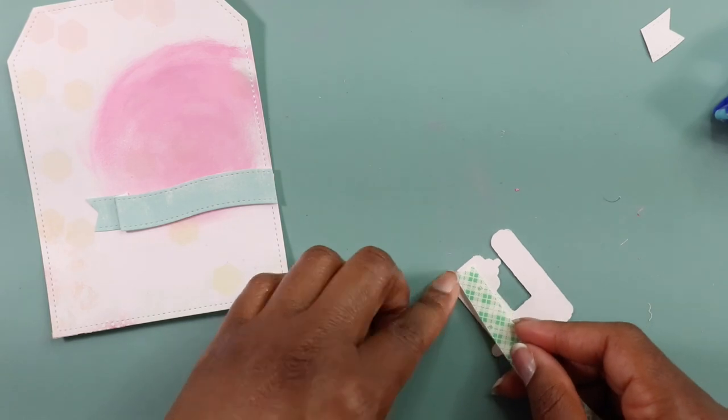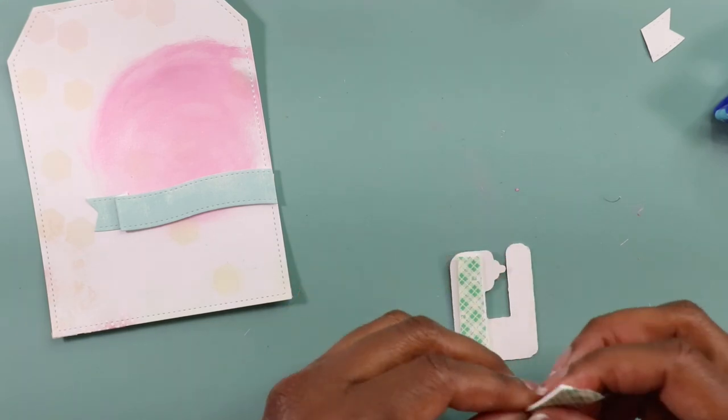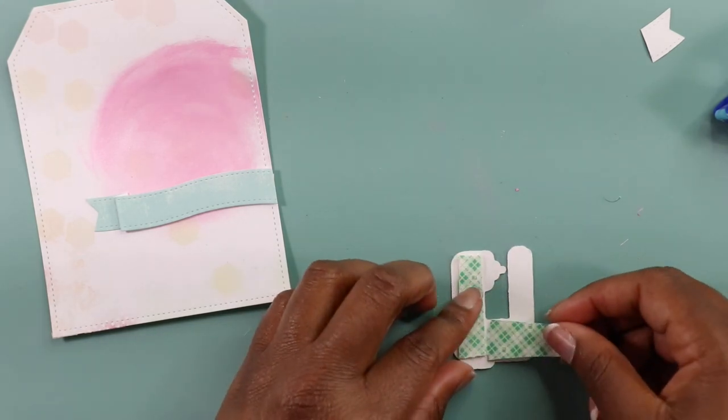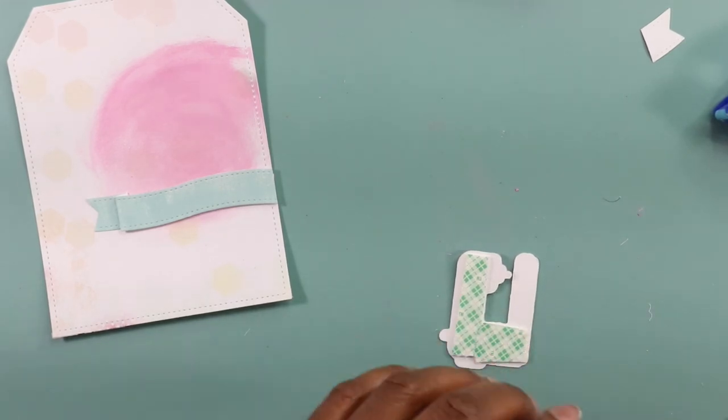I want my sewing machine image to be at the same depth as the banner, so I am adding some foam tape to the back of it as well and then I am just going to add it to the tag.